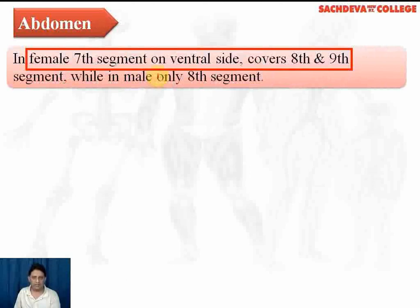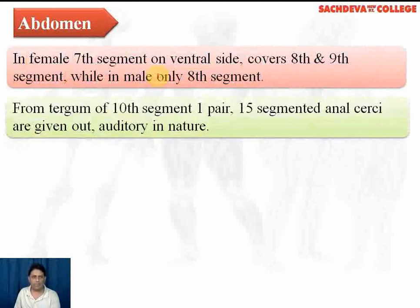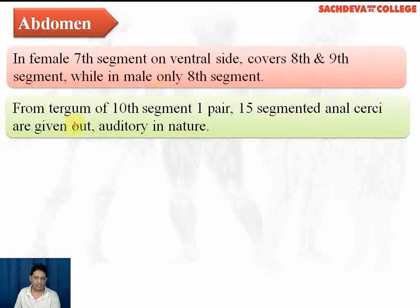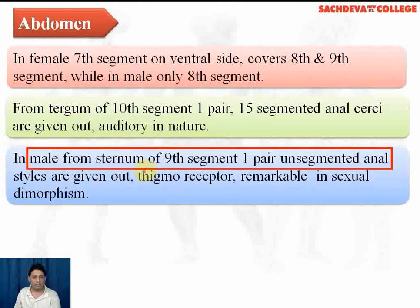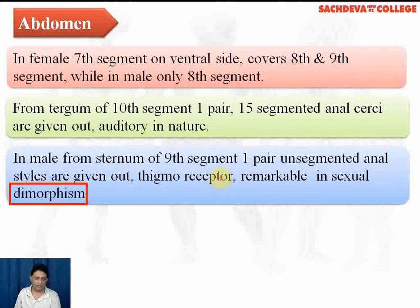In the female, the 7th segment on the ventral side covers the 8th and 9th segments, while in the male only the 8th segment covers the abdomen. From the tergum of the 10th segment, one pair of 15-segmented anal cerci are present in both sexes — these are auditory in nature. In males, from the sternum of the 9th segment, one pair of unsegmented anal styles are present. According to some scientists these are thigmoreceptors, but their main function is in sexual dimorphism — differentiating male cockroach from female.